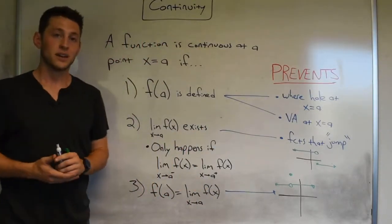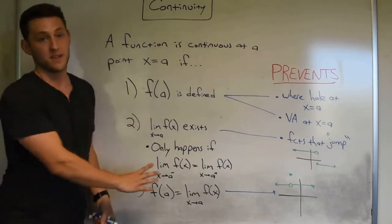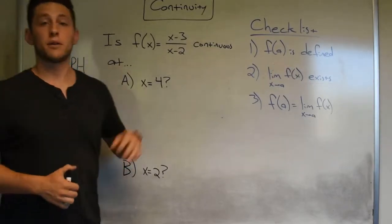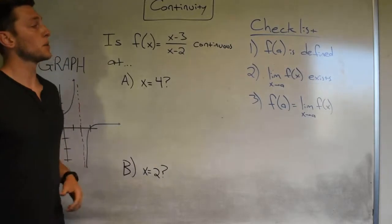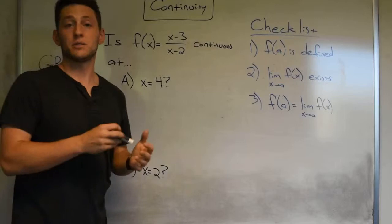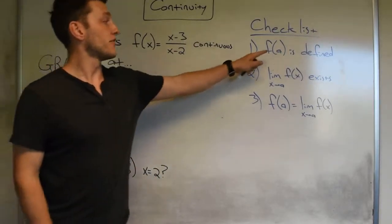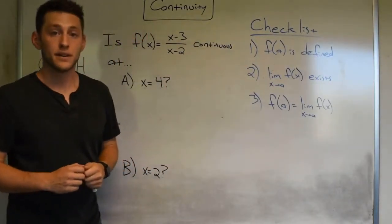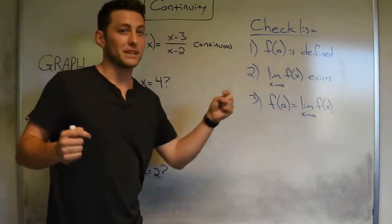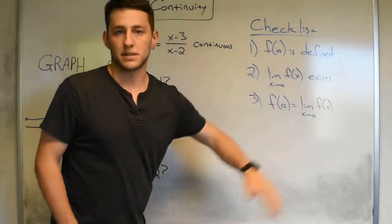Now let's dive into an example so we can see the particulars about how to really work with this type of definition. Let's try an example of determining whether a function is continuous at a given point. Just as a reminder, we have a checklist: one, does the function exist — is it defined at that point? Two, does the limit exist as we approach that point, which means we're going to have to check from the left and right? And last but not least, does our function value actually equal what the limit told us?